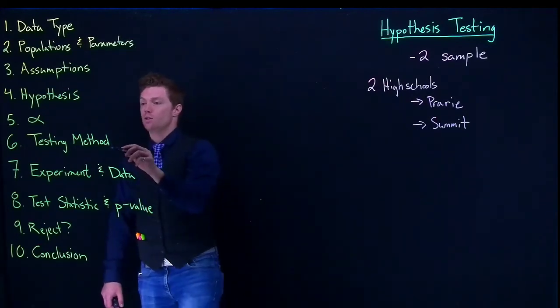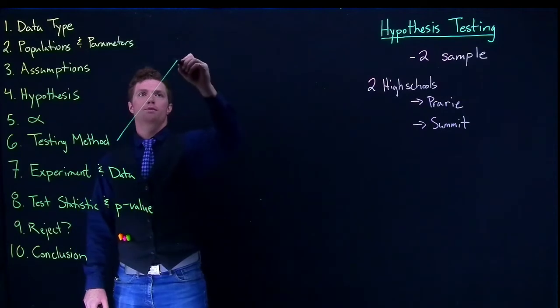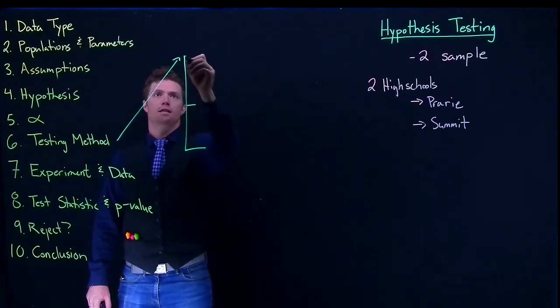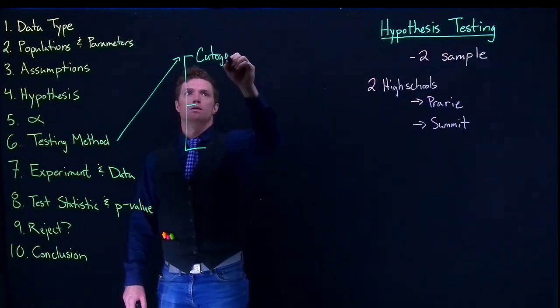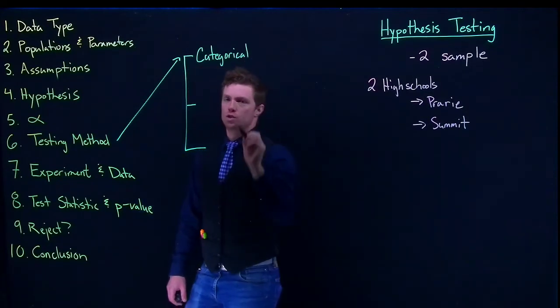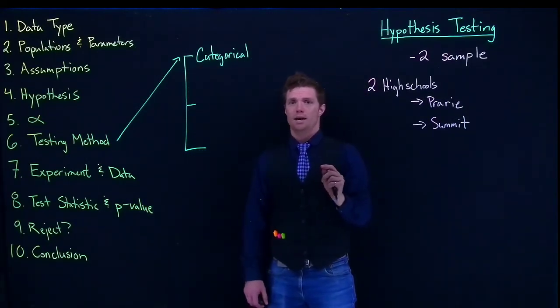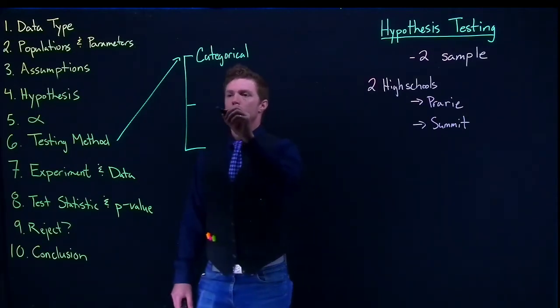Next we've got to figure out our testing method. For our testing method, we've really got three different types. We've got one if we're dealing with categorical. If we're dealing with categorical, we're basically just doing a two-sample test of our proportions, so we just have one option. But if we're dealing with means, we've got two options.